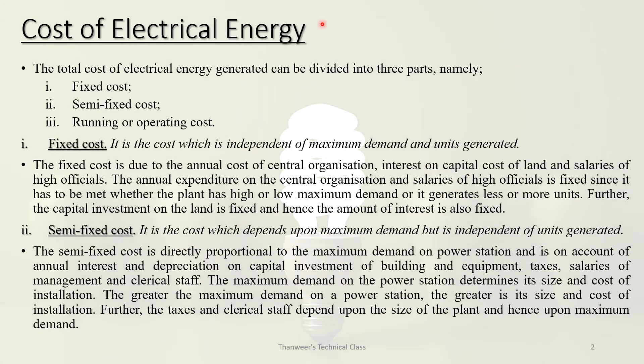Electrical energy costs are divided into three parts: fixed costs, semi-fixed costs, and running costs — also called operating costs.